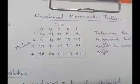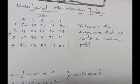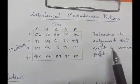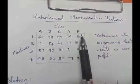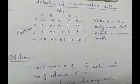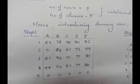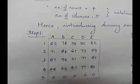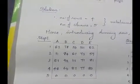This is an example of an unbalanced maximization problem. The question asks us to determine the assignments that will result in maximum profit. Looking at the number of rows and columns — there are 4 rows and 5 columns — therefore it is an unbalanced maximization problem. To make it balanced, we add a dummy row with cost value zero.